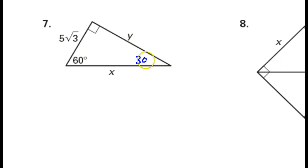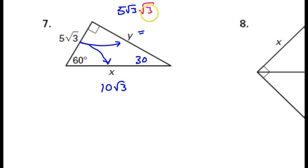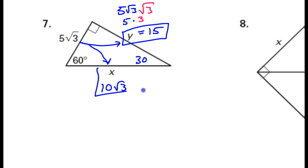Looking at number 7 — this is 60, so this must be 30. That means this is the short leg right there. If we know the short leg and want the hypotenuse, we double it, so that's going to give me 10 radical 3. For the long leg, take the short leg and multiply by radical 3. So I take my short leg 5 radical 3 and multiply that by radical 3. Radical 3 times radical 3 is just 3, so then we have 5 times 3, which is 15. So y is 15 and x is 10 radical 3.